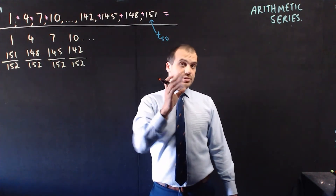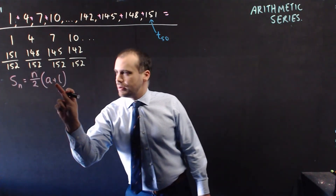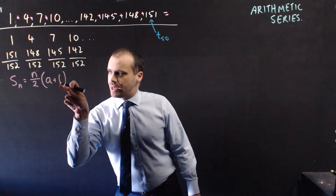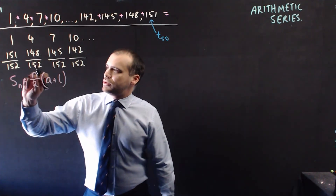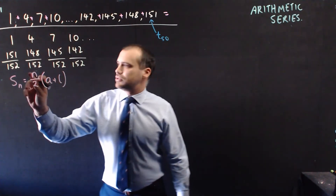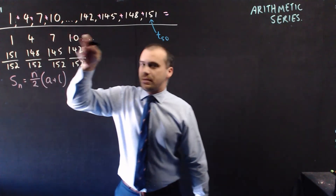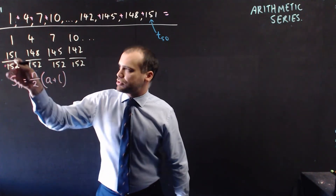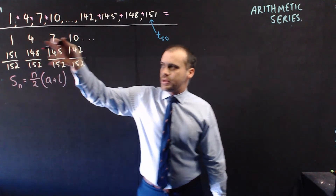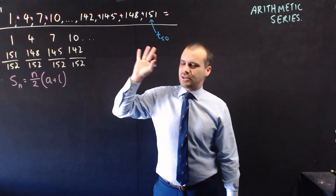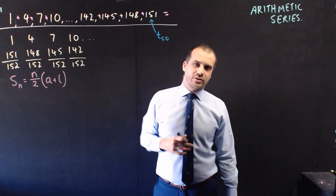And this is your arithmetic series formula. Take the first number plus the last number L, and then multiply that by the number of terms divided by 2, because we've got that many pairs. This gives you the total of the pair, and this gives you how many pairs there are. It's fantastic — it's such a clever idea how to add those together.